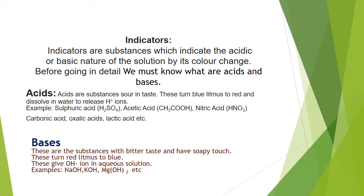Acids are substances which are sour in taste and turn blue litmus to red. They dissolve in water to release H⁺ ions. Examples include sulfuric acid, acetic acid, and nitric acid. Bases are substances with a bitter taste and soapy touch. They turn red litmus to blue and give OH⁻ ions in aqueous solution. All acids are sour and all bases are bitter in taste.